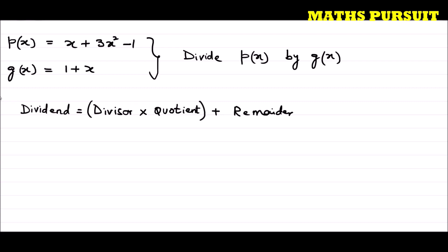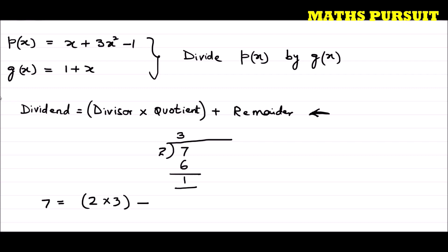Let me give you one example. If I am going to divide 7 by 2: 2 threes are 6, and we get a remainder of 1. So here dividend is 7, divisor is 2, quotient is 3, and remainder is 1. So dividend equals divisor into quotient plus remainder: 2 into 3 is 6, and 6 plus 1 equals 7. This is the formula we can correlate.